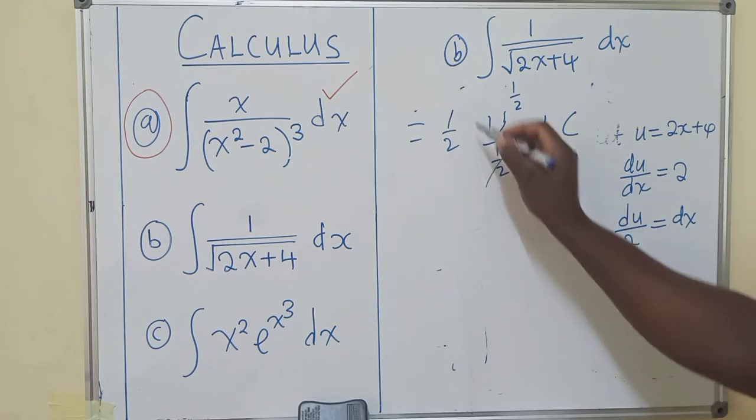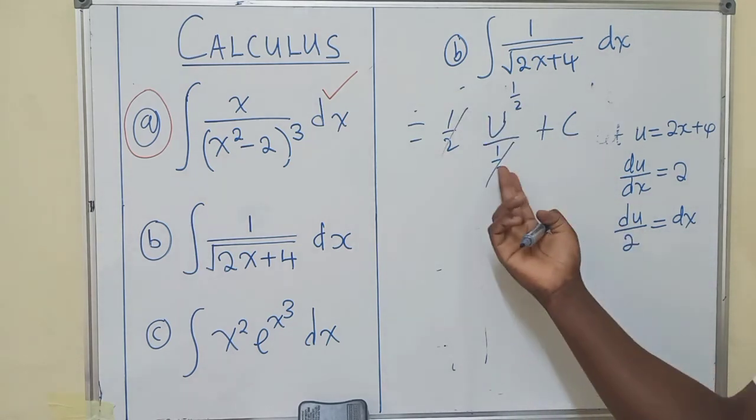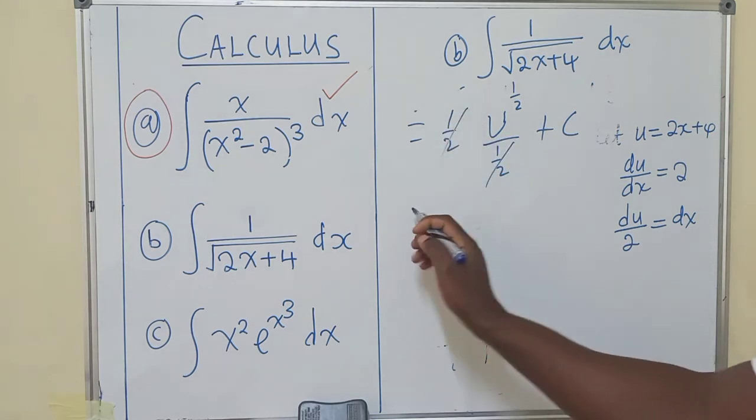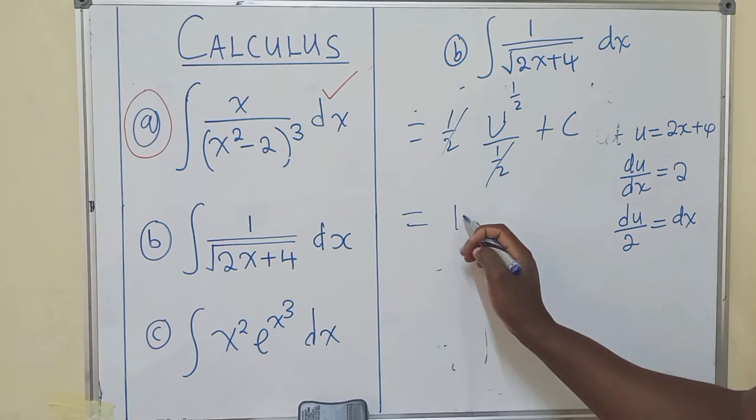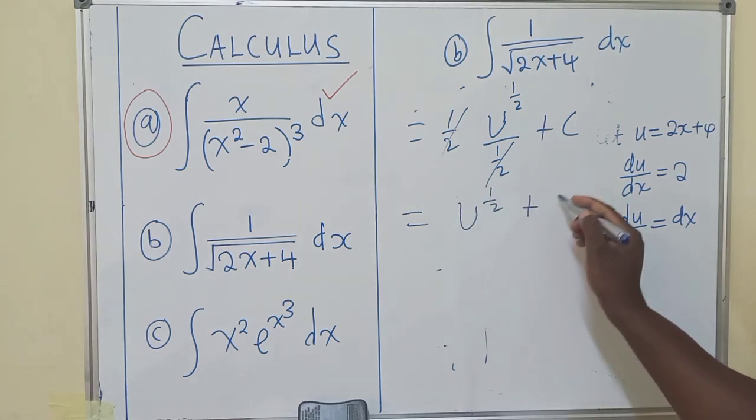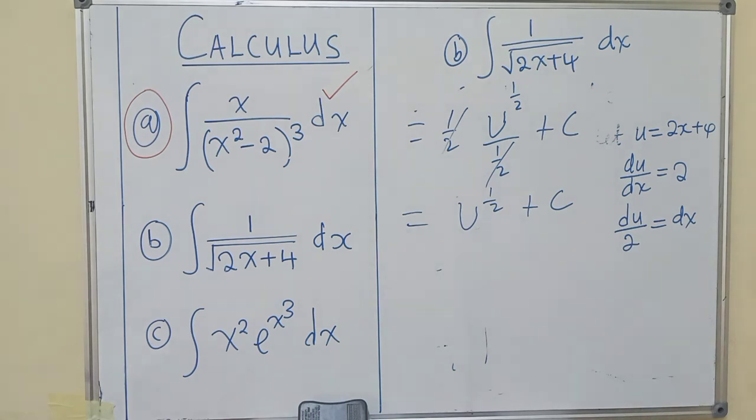Now here, this one will come and reciprocate such that this and this will cancel, because we are dividing this fraction into this fraction. The next thing will be to write that one there, plus c.